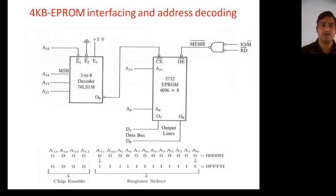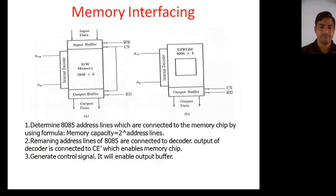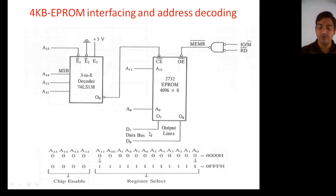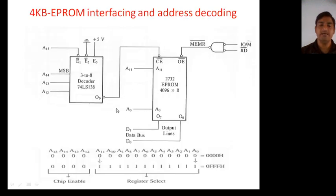Here is a question: how will you interface a 4KB EEPROM with the 8085, and also determine the addressing range? The first step: memory capacity equals 2 to the power of address lines. In this case it is 4KB, meaning 4096, which is 2 to the power 12. So address lines are A0 to A11. This gives us the output buffer D0 to D7. The remaining lines — A12, A13, A14, and A15 — are connected to the decoder.